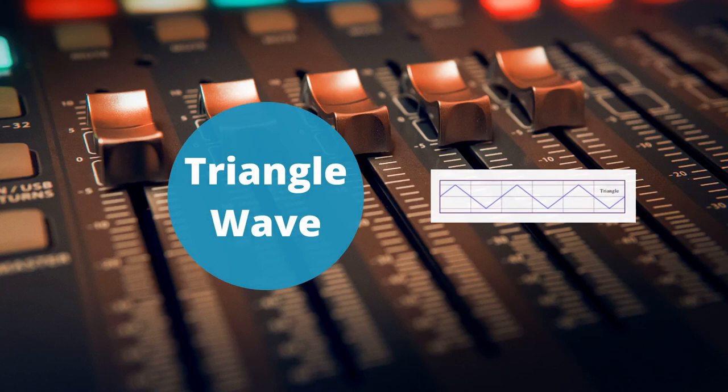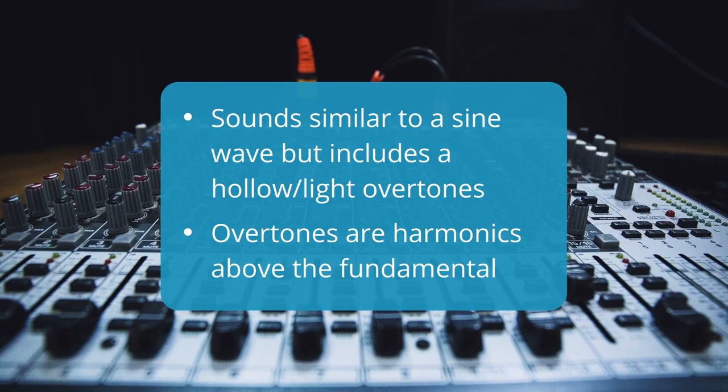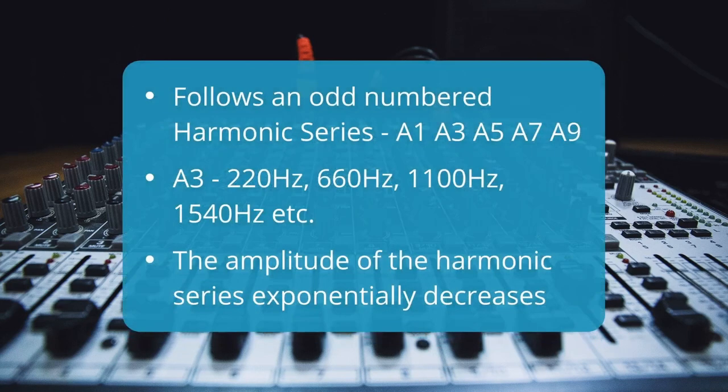The triangle wave. Sounds similar to a sine wave, but includes hollow, light overtones. Overtones are harmonics above the fundamental frequency. It follows an odd-numbered harmonic series. A3 would be 220, 660, 1100, and so on. The amplitude of the harmonic series exponentially decreases.